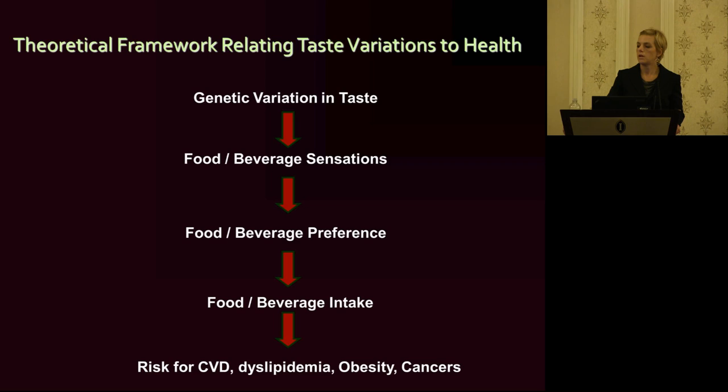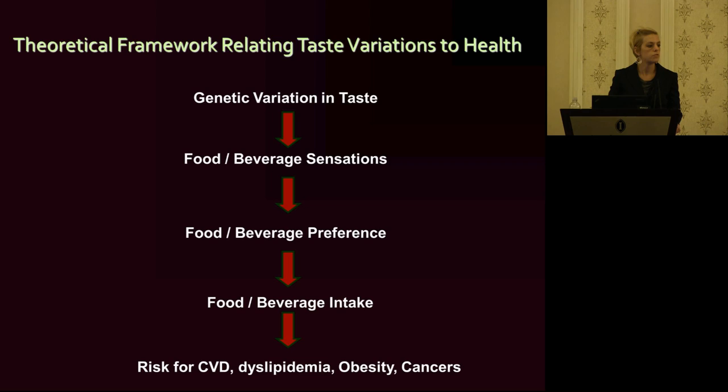We've been looking at genetic variations, in particular genetic differences in the ability to taste bitter compounds, for quite a while. We know that there are lots of genetic variations in taste receptors, and these influence our ability to perceive differences in foods or beverages. But this relationship is not one-to-one and can in fact be modified by exposure to foods or other substances in our diet.